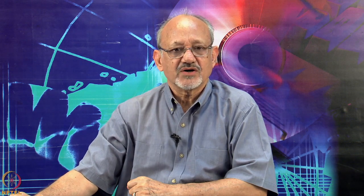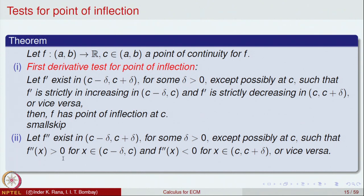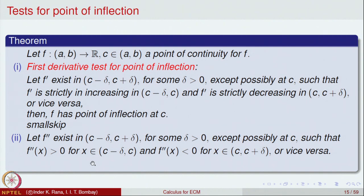Putting these two together means the function changes its nature from strictly concave up to strictly concave down, so c will be a point of inflection. This is the first derivative test for points of inflection. Similarly, the second derivative condition applies: if the second derivative is bigger than 0 on the left side and strictly less than 0 on the right side, or vice versa, those are the conditions in terms of the second derivative.